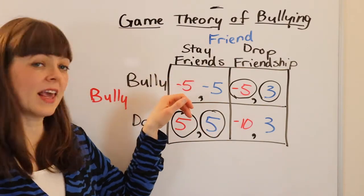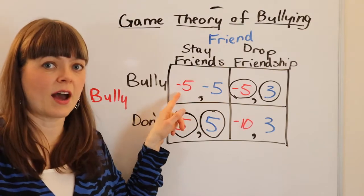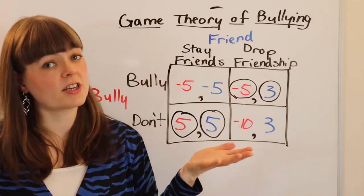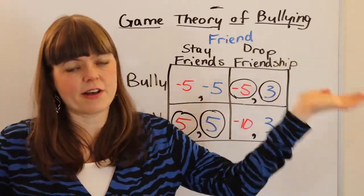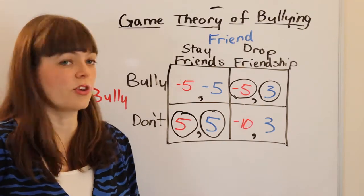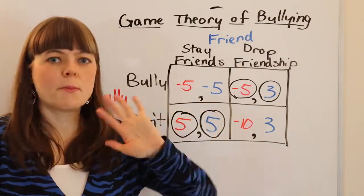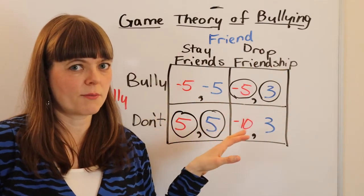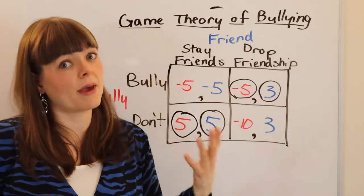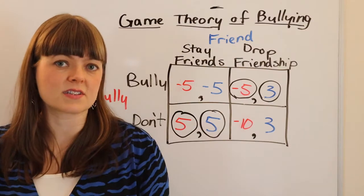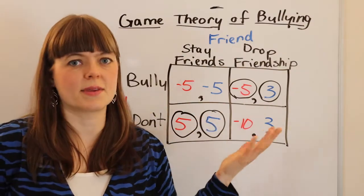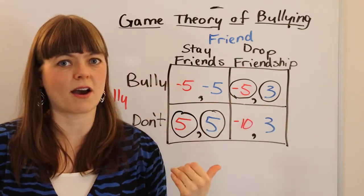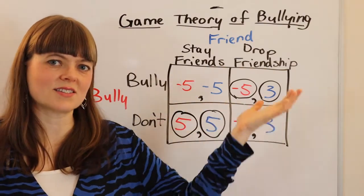Of course you have to ask whether you can actually convince the bully that even if they feel at the top of the pecking order right now, they will lose friends in the long run — that might be a challenge. You have to evaluate the feasibility of every payoff change you're trying to make. The general approach to policy is to look at a game and ask how you can change the equilibrium without changing too many payoffs, because payoffs are hard to change. It takes a lot of investment from parents, teachers, and maybe psychologists on campus, so minimizing the number of changes is key.